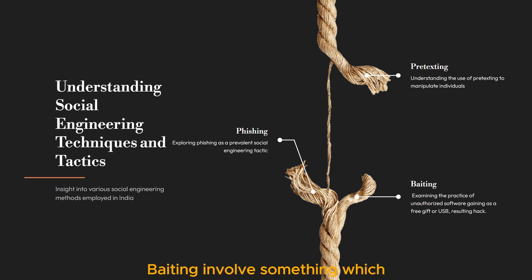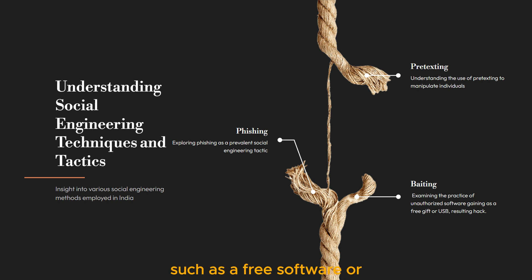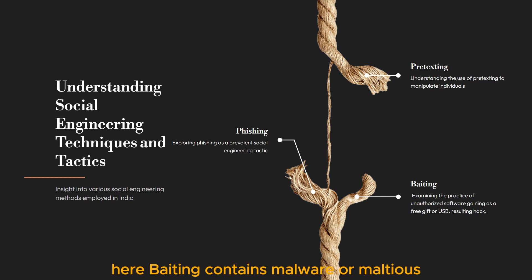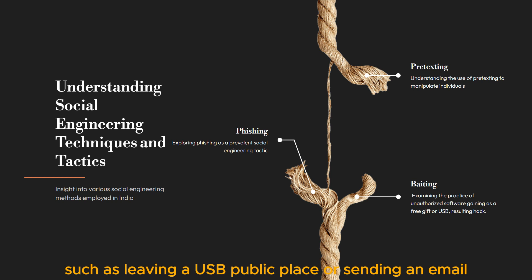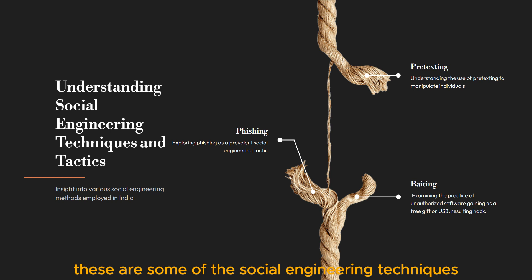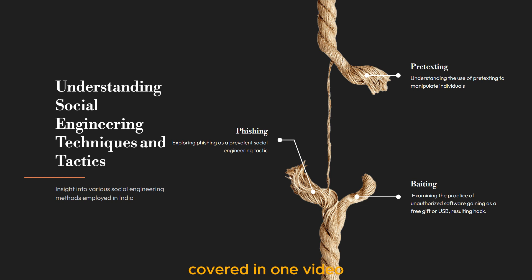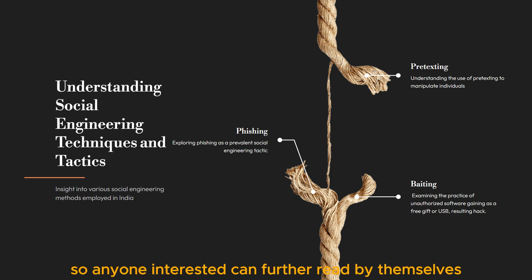The third technique is baiting. Baiting involves enticing the other person with something appealing, such as free software or an exciting offer. Baiting content contains malware or malicious elements that compromise the victim's security, such as leaving a USB drive in a public place or sending an email containing details of free content. There are many more social engineering techniques which cannot all be covered in one video, so anyone interested can read further on their own.